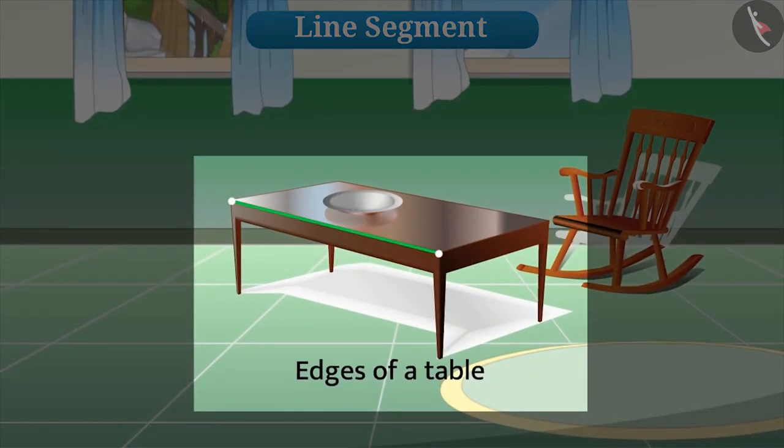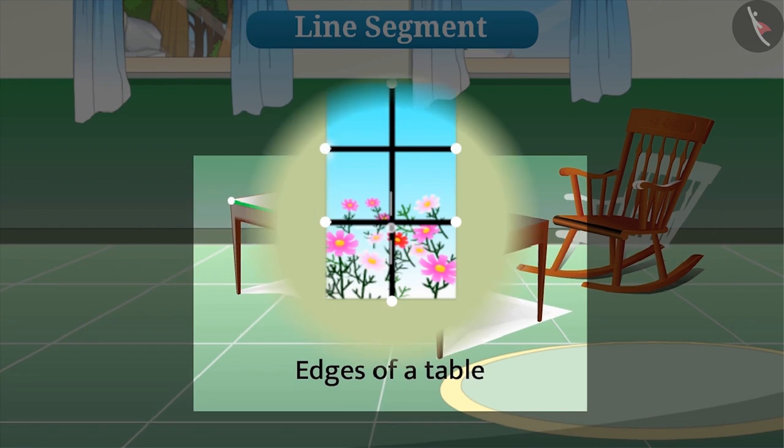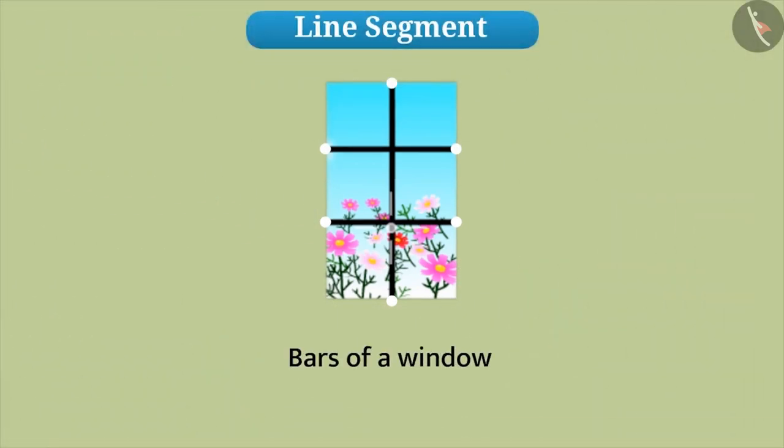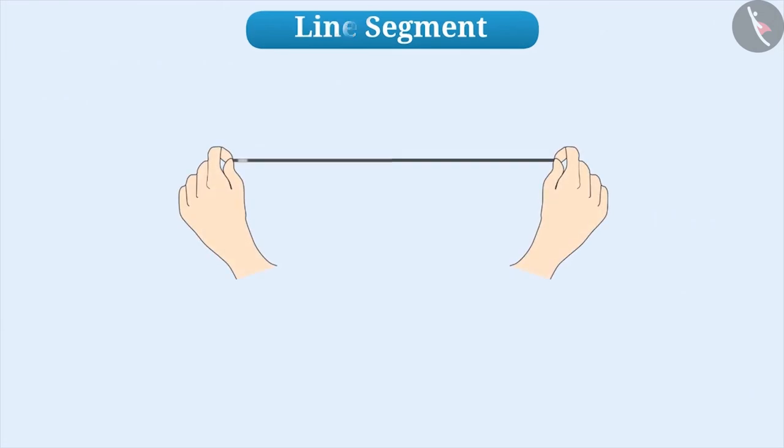The examples of line segment are sides of a paper, edges of a table, bars of a window, etc. If we straighten a thread or a wire holding the two ends, then that also will become a line segment.